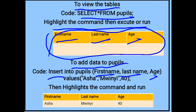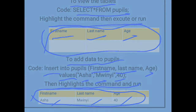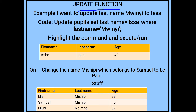The INSERT INTO pupils command specifies the attributes: first name, last name, and age. The values for the attributes are, for example, 'Asha' for first name. Write the command then run or execute it. The output will be shown on the table below, meaning we have added the record — first name: Asha, last name: Asha, age: 40. The UPDATE function is an active function used to change records in database information.